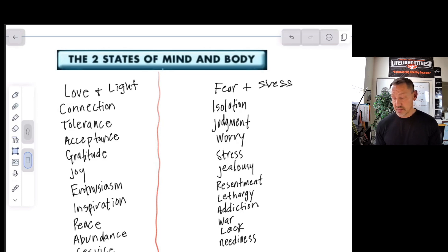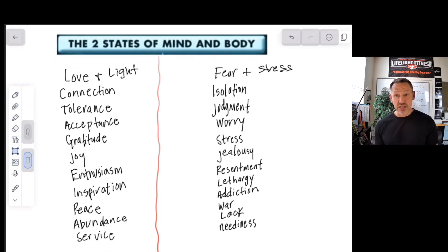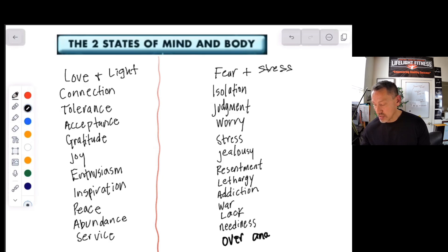I want to talk to you about states of mind and body. The rest of this talk is going to be about your inner energy, your inner state, your inner stance, how you exist in the world. You can either exist in a state of love and light or fear and stress. Love and light: you'll experience such emotions and values as connection, tolerance, acceptance, gratitude, joy, enthusiasm, inspiration, peace, abundance, service. Fear and stress: isolation, judgment, worry. Overanalyzing is a big one.